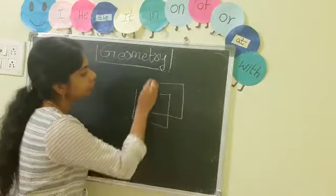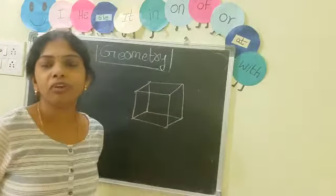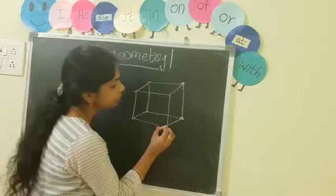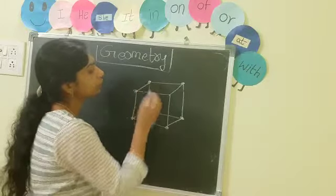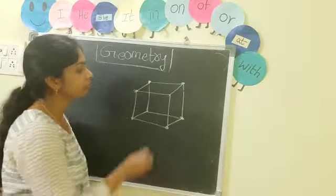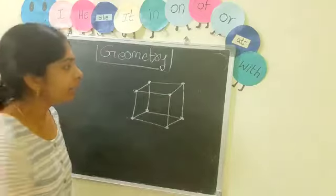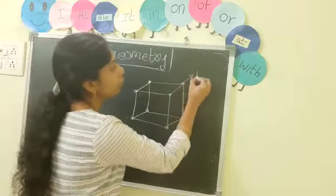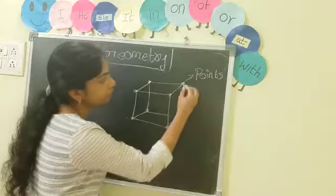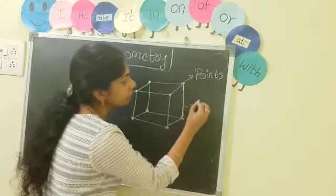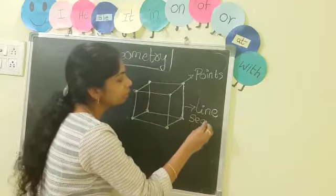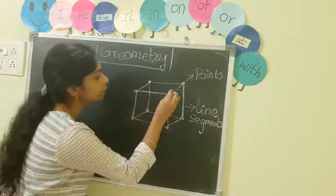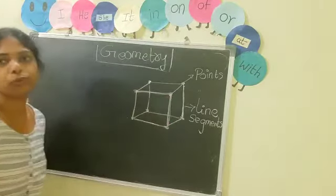See the picture. What is this picture, children? This is a cube. It is built with 6 square faces. See these vertices — these vertices are called points. And see these edges; these edges are called line segments. This is the face of the cube.